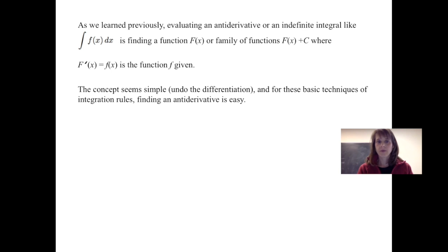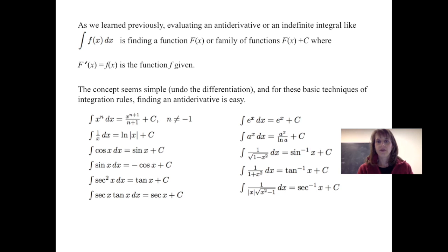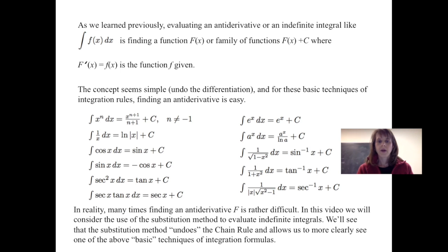The concept seems simple — we're simply undoing the differentiation. And for these basic techniques of integration, finding an antiderivative is fairly easy; we just have to match the form we're looking for. But in reality, many times finding an antiderivative is fairly difficult. So we're going to consider the use of the substitution method, which undoes the chain rule and allows us to see more clearly one of the above basic techniques of integration.